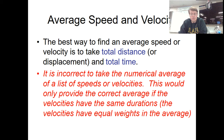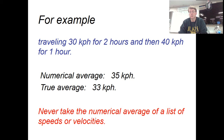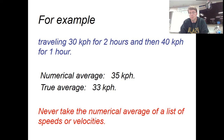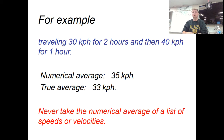The better way to find average velocity or average speed is to take total displacement divided by total time, or total distance divided by total time if using speed. For example: traveling at 30 kilometers per hour for two hours and then 40 kilometers per hour for one hour. If you did a mathematical average — adding the two numbers and dividing by two — you'd get 35 km/h. But that's incorrect. You traveled at 30 km/h for longer, so your average should be closer to 30 km/h.